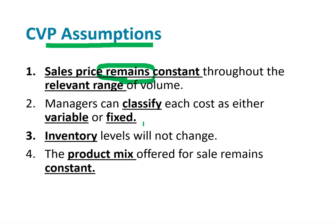That's a reference back to Chapter 6. We're going to assume that we can classify costs as being either variable or fixed, that inventory levels do not change, and that the product mix stays constant. The product mix is how much you sell of one product versus another, and that will also remain constant in our calculations.